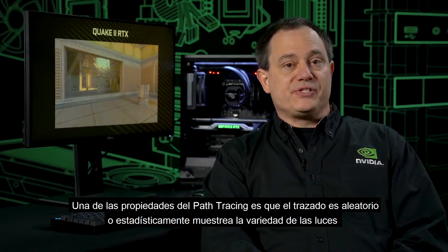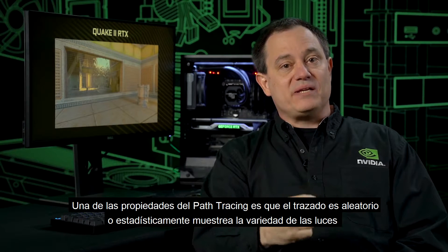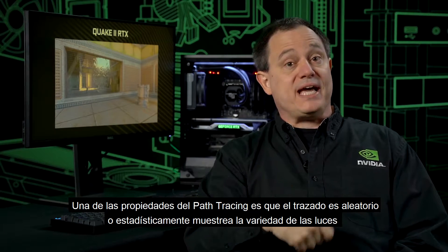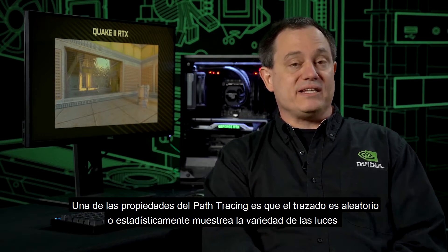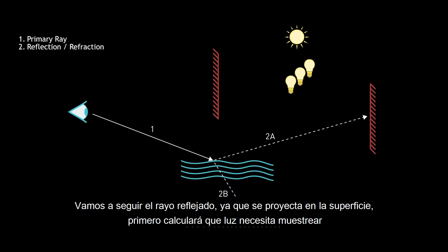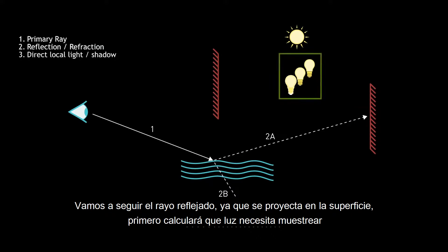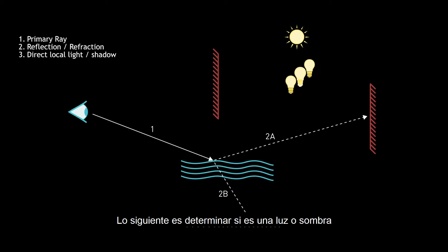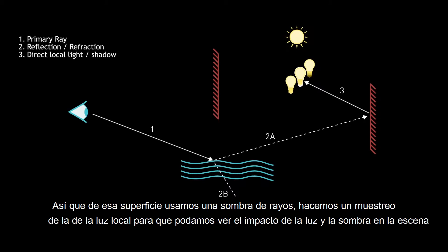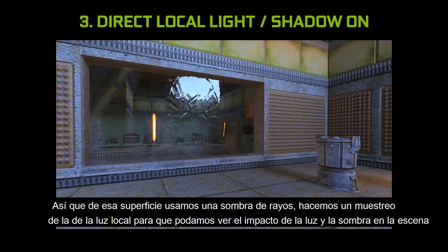One of the properties of our path tracer is that it stochastically samples between a variety of lights. We're going to follow that reflected ray as it intersects with the surface. First, it will compute which light it needs to sample from. The second thing it will do is determine whether it's in light or shadow. So we've shot a ray from that surface, sampled the local lights, and you can see the impact of both light and shadow in the scene.